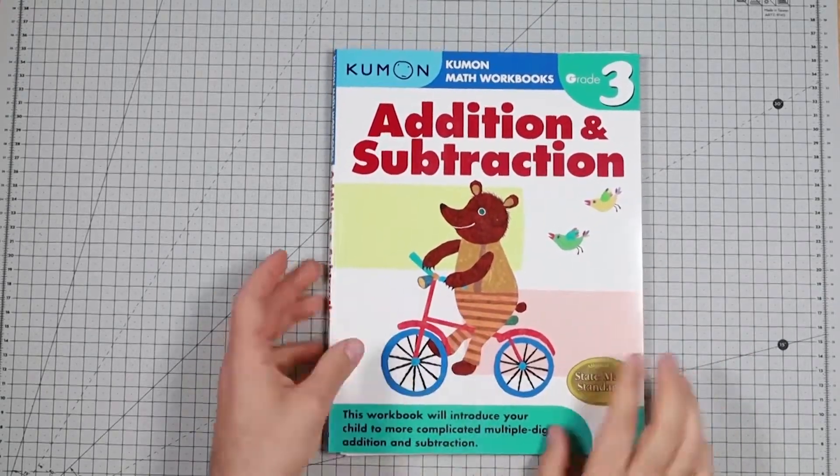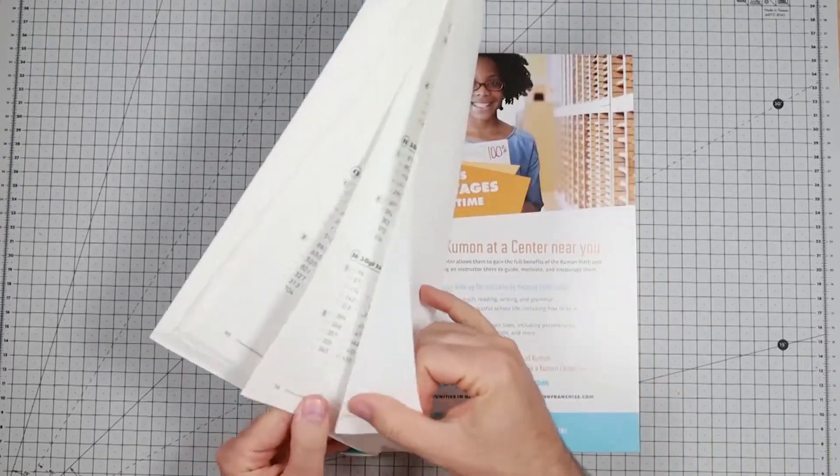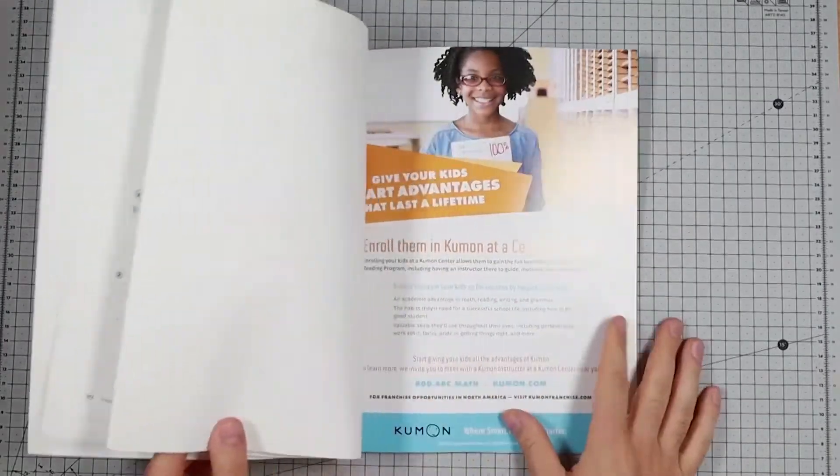Your typical Kumon fare, nice jacket, about 80, there you go, 100 pages with the solutions, solutions at the back.